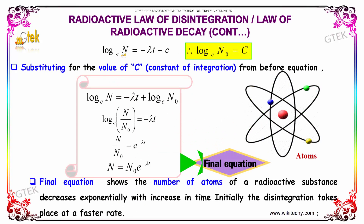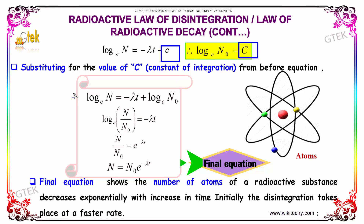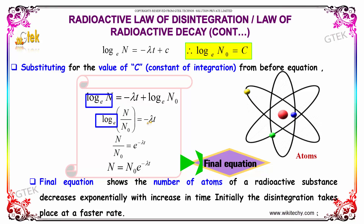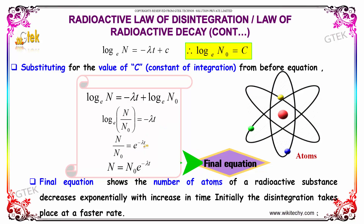Since ln(N) = -λt + c and ln(N₀) = c, substituting c we get: ln(N) - ln(N₀) = -λt, so ln(N/N₀) = -λt. Therefore N/N₀ = e^(-λt) and N = N₀e^(-λt). This final equation shows that the number of atoms of a radioactive substance decreases exponentially with increase in time. Initially the disintegration takes place at a very fast rate.